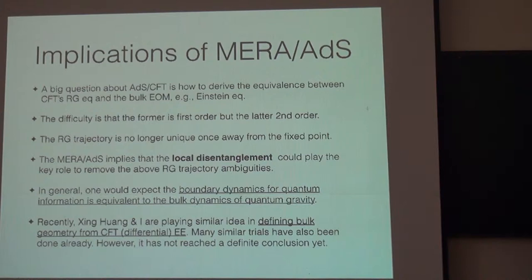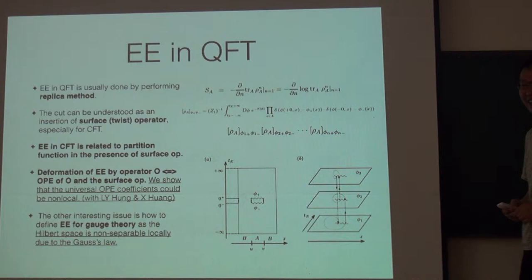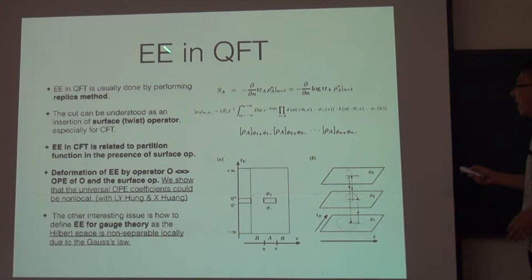Of course, it's not so clear how to do this. But I think this must be a direction people should want to try. And in this case, we will expect the boundary dynamics for quantum information should be equivalent to bulk dynamics of quantum gravity if we can finally make everything clear about this operation. And then I will just probably, go on? No, no, I'm not going on. Maybe I'll finish in five minutes. Another five minutes.